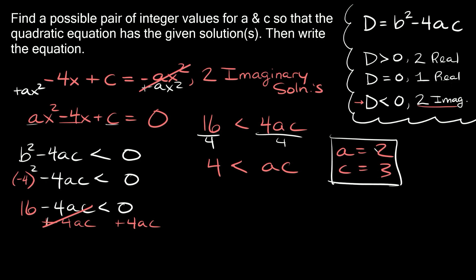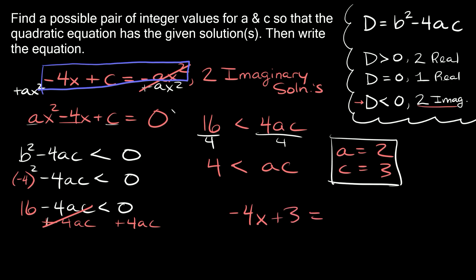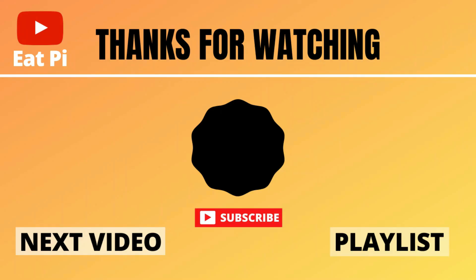Those are our two solutions. Plugging back into the original equation — negative 4x plus c equals negative ax squared — with c equal to 3 and a equal to 2, we get: negative 4x plus 3 is equal to negative 2x squared. If you found the video helpful, leave a thumbs up below, and if you have any questions or want to see other examples, let me know in the comment section below.